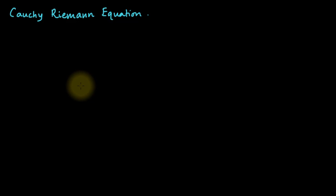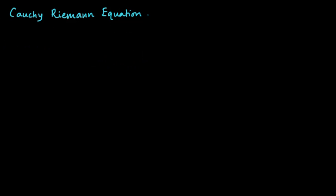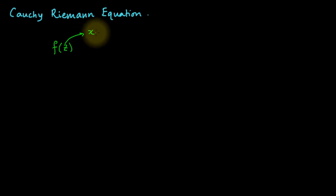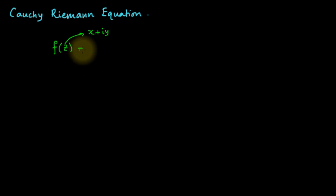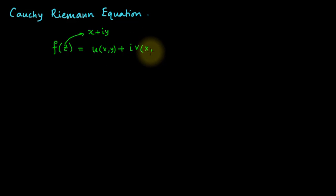In this lecture we will see a very intuitive proof of the Cauchy-Riemann equations. Consider a complex function f of a complex variable z, where z is nothing but x plus i·y. This function has a real part u and an imaginary part v, where u and v are both functions of x and y.